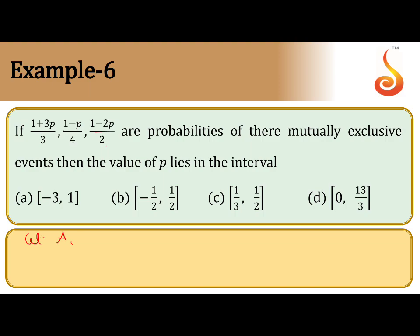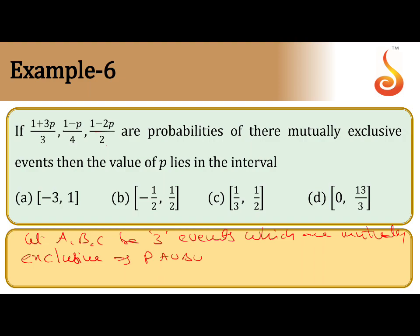Let A, B, C be 3 mutually exclusive events. This implies we have the property: P(A ∪ B ∪ C) = P(A) + P(B) + P(C).